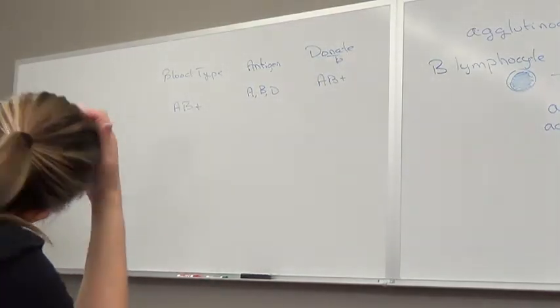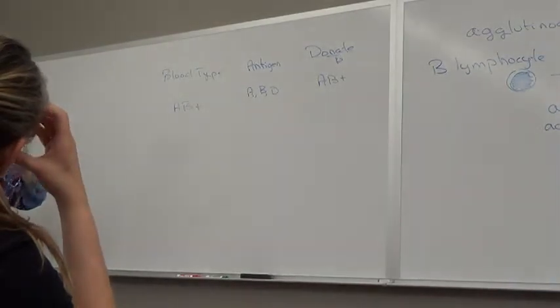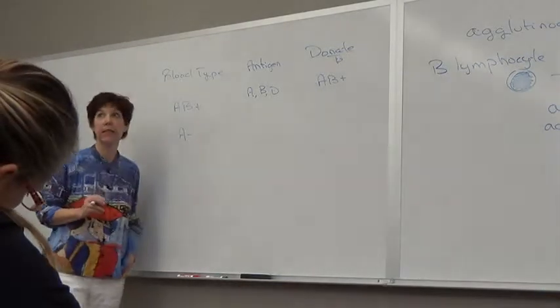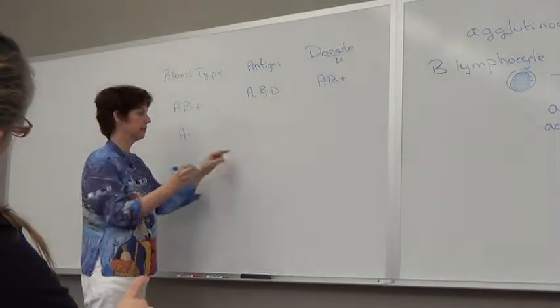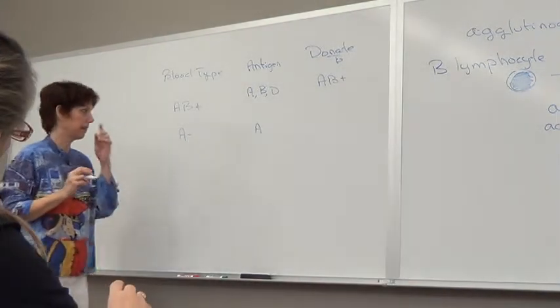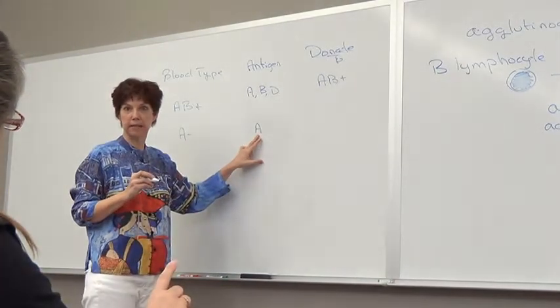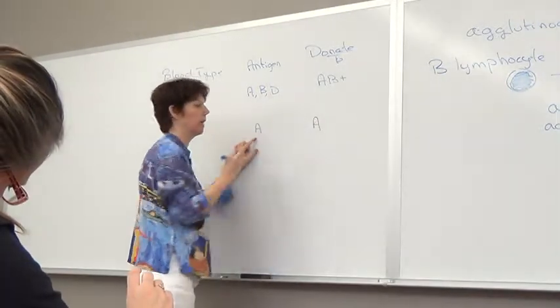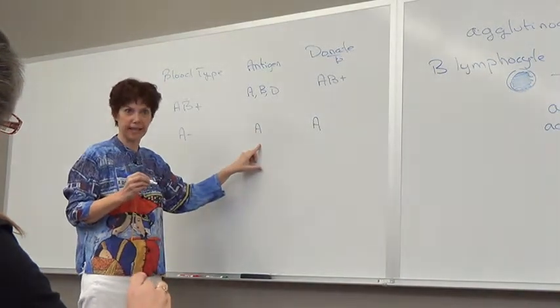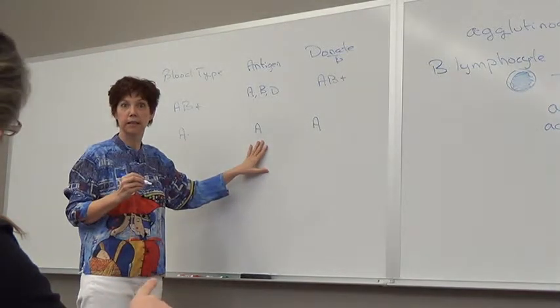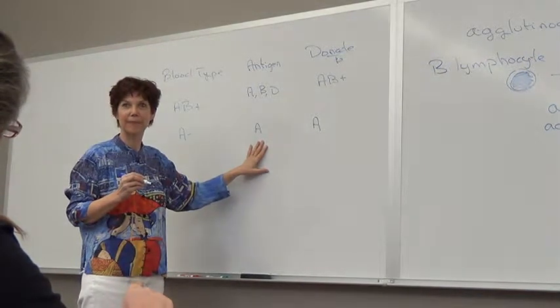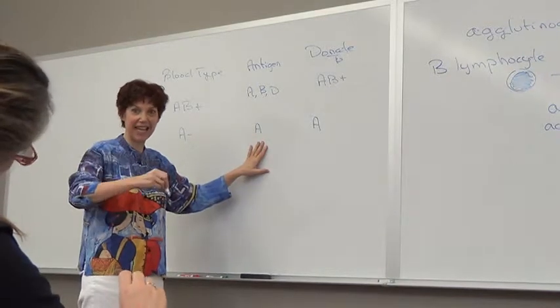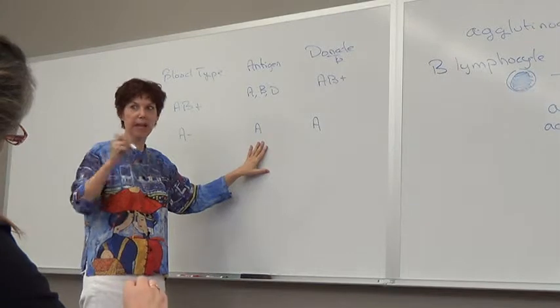So let's do quickly with this one, A negative. So what antigens are present? A only. So we can't give to B because B would have antibodies against A. We definitely can give to A. Can we give to O? No, because O would have antibodies against A. Can we give to AB? It has no antibodies, right? Because it has the antigen A and it has the antigen B, so AB would have no antibodies.